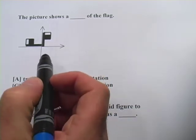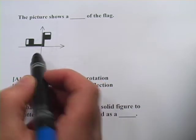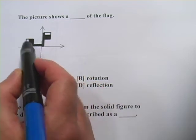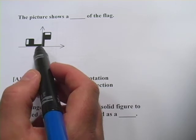This first question says this picture shows a blank of the flag, and they're looking for the name of the right transformation there. And in this case, the only way it's going to change orientation like that and move 90 degrees is going to be with a rotation.